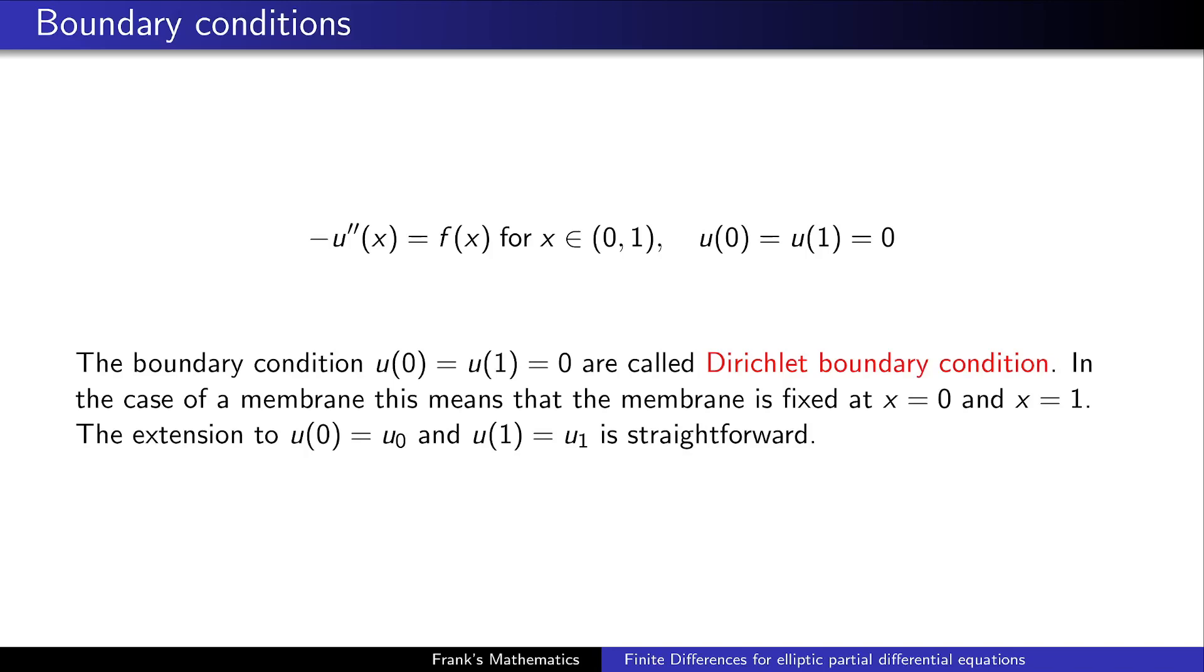If you have a partial differential equation and you impose fixed boundary values, as you can see here, we impose fixed values on boundary, you usually call this a Dirichlet boundary condition. An interpretation of this is that in the case of a membrane, this means that the membrane is fixed at the boundary, so here at x equals zero and at x equals one. And of course, in the numerics, the extension to other values than zero is straightforward. So keep in mind, conditions like this are usually called Dirichlet boundary conditions.